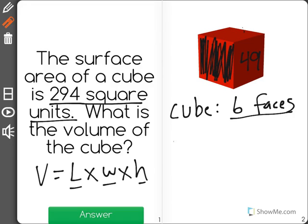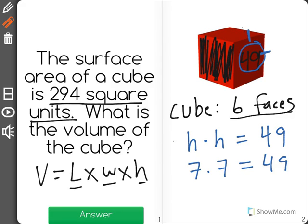So first, we know that length times width here would give us a total of 49. So what number times itself would give us 49? And the correct answer there is 7 times 7 would give us 49. So that means that we have a cube with a side length of 7.